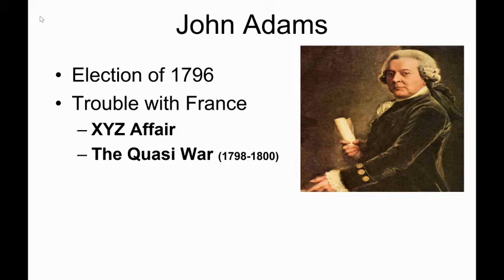Remember from last time, when the French Revolution was going on, it became an ugly thing, and other countries around Europe, including England, really worried about it spreading to their country. They declared war on France to put down this democratic movement, and that involved us. At one point we were about to go to war with Britain because they were seizing our ships when we tried to trade with France and impressing our sailors. We ended up making the Jay Treaty with Britain, and that took care of the hostilities with Britain.